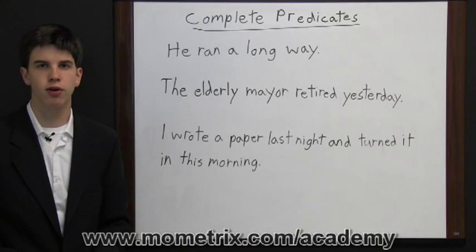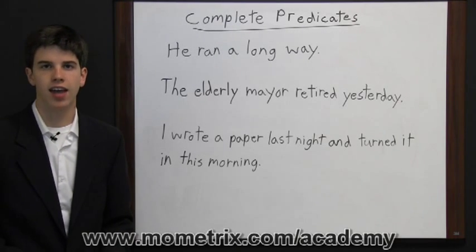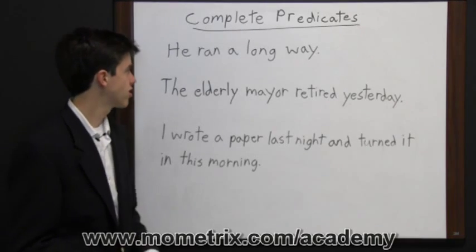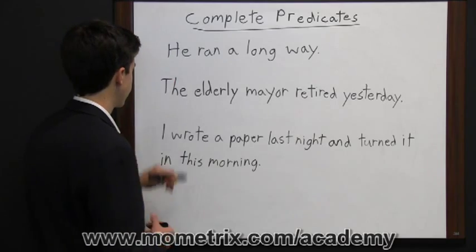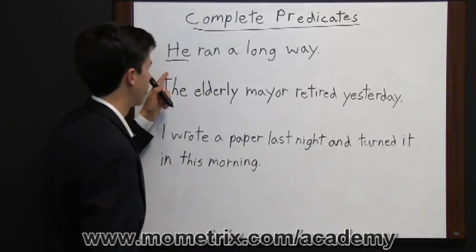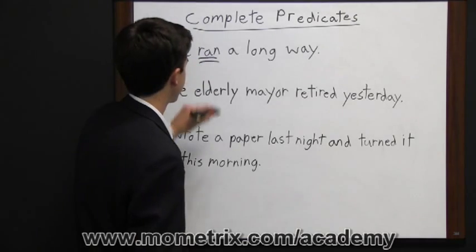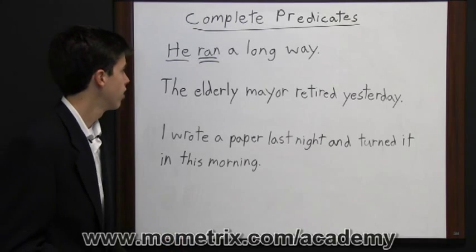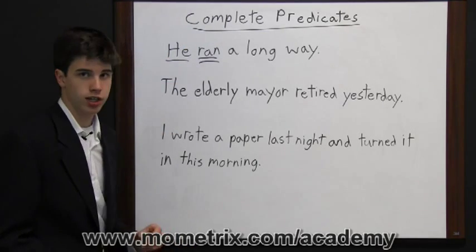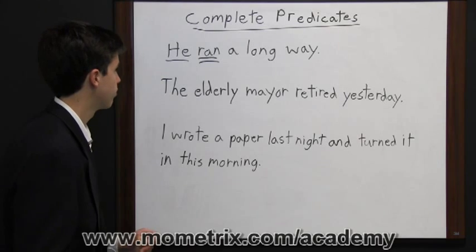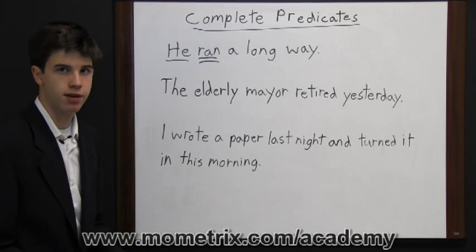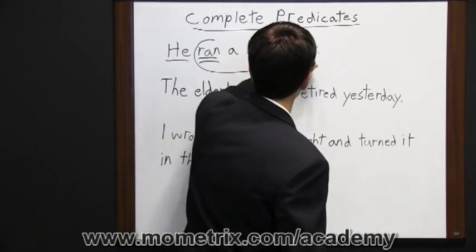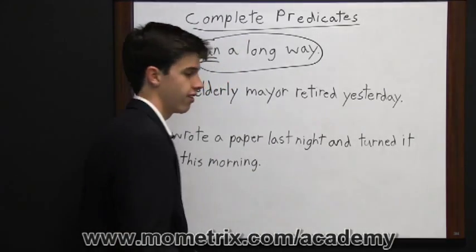A complete predicate consists of both the verb of a sentence and the words around it — the words that modify the verb and complete its meaning. In this sentence, 'he' is the subject, and 'ran' is the verb. A simple predicate would just be 'ran,' but a complete predicate includes all the words that modify and further describe the verb. So 'ran a long way' is the complete predicate in this sentence.